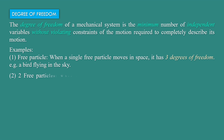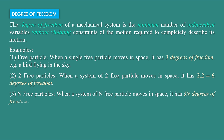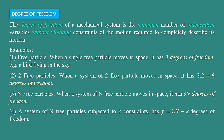That is three multiplied by two. For two free particles: when a system of two free particles moves in space, it has 3 × 2 = 6 degrees of freedom. For N free particles: when a system of N free particles moves in space, it has 3N degrees of freedom. A system of N free particles subjected to K constraints has F = 3N − K degrees of freedom.